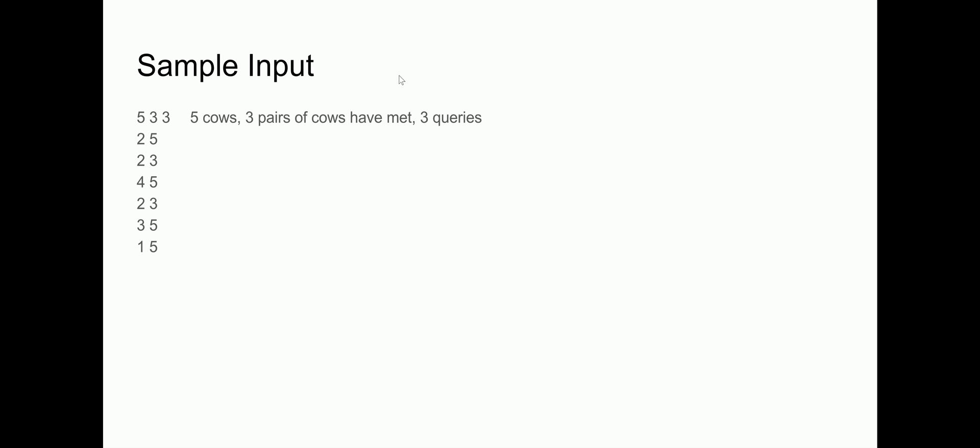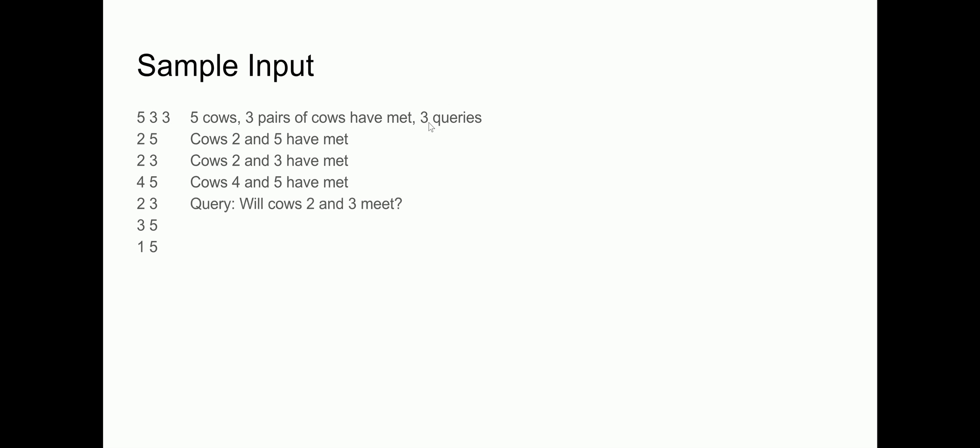This is the sample input. The first line means you have five cows, three pairs of cows have already met, and you have three queries — this being N, M, and Q. The next three lines are the pairs: cows two and five have met, cows two and three have met, and cows four and five have met. The next three lines are the queries: will cows two and three meet, will cows three and five meet, and will cows one and five meet?